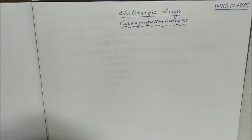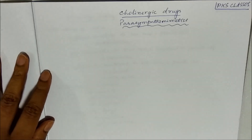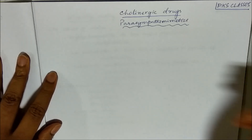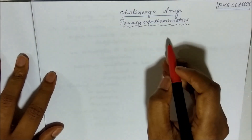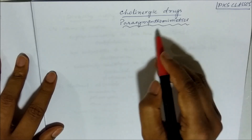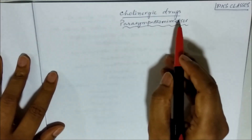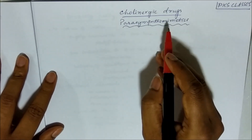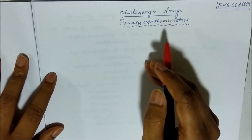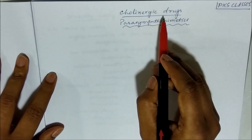Hi, welcome to PKS classes. Today, we will study cholinergic drugs or parasympathomimetics. In the parasympathomimetic nervous system, the neurotransmitter is acetylcholine, and accordingly we call these drugs cholinergic drugs.